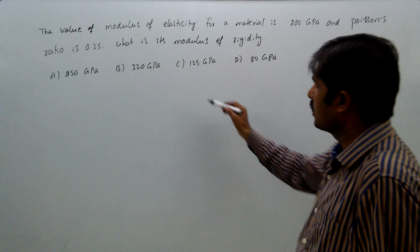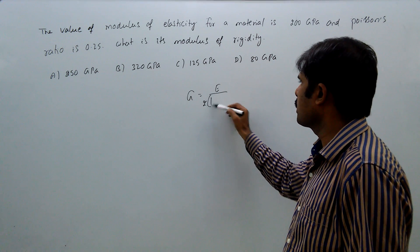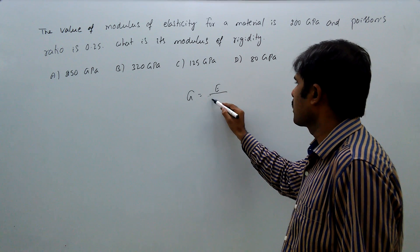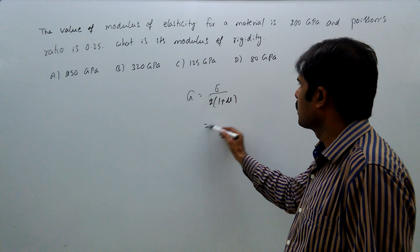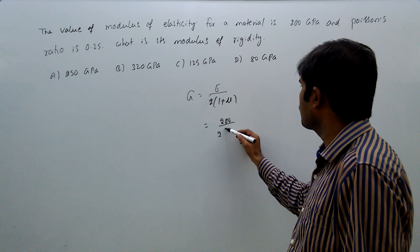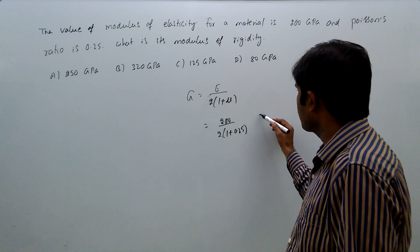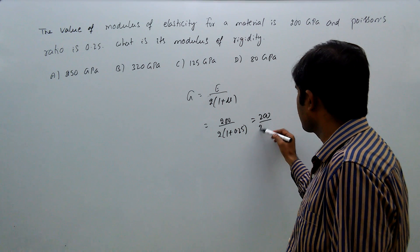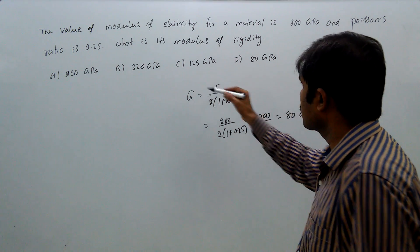Now we know G = E / (2 × (1 + μ)). That equals 200 gigapascals divided by 2 times (1 + 0.25), which is 200 divided by 2.5, equals 80 gigapascals. So option D.